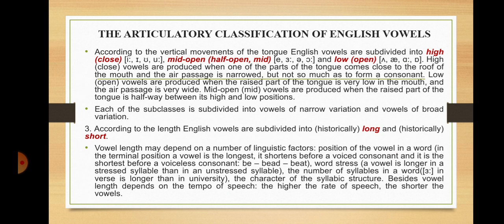According to the vertical movements of the tongue, English vowels are subdivided into high (close), mid-open (half-open), mid, and low (open). High or close vowels are produced when one of the parts of the tongue comes close to the roof of the mouth and the air passage is narrowed, but not so much as to form a consonant. Low or open vowels are produced when the raised part of the tongue is very low and the air passage is very wide. Mid-open vowels are produced when the raised part of the tongue is halfway between its high and low positions. Each subclass is further subdivided into vowels of narrow variation and vowels of broad variation.